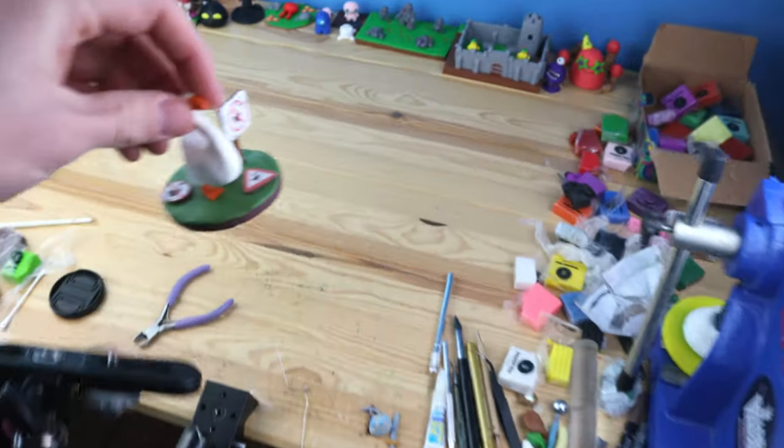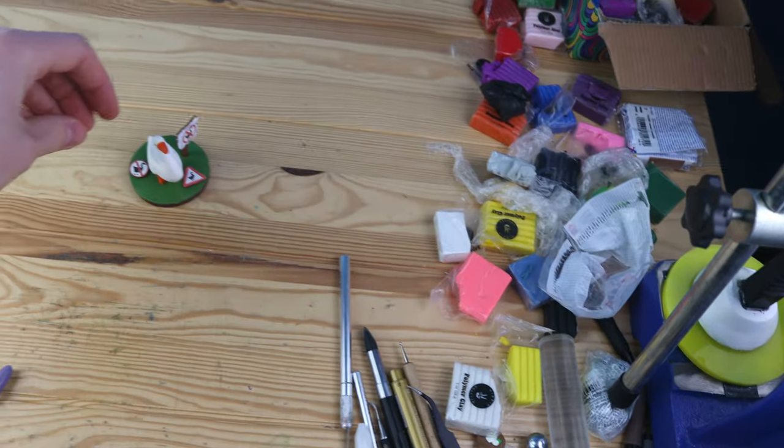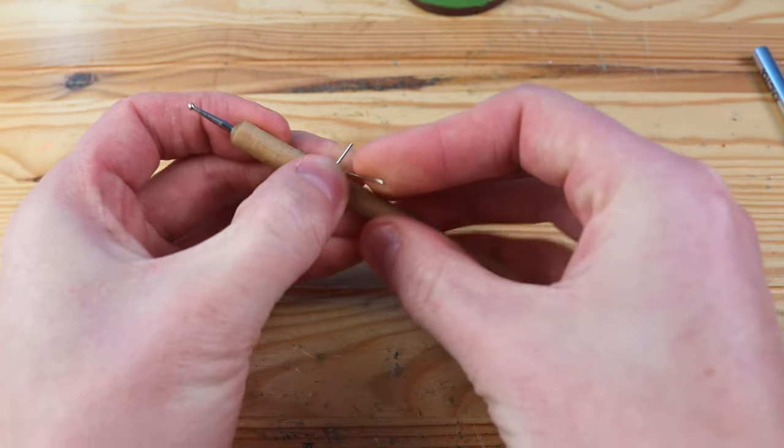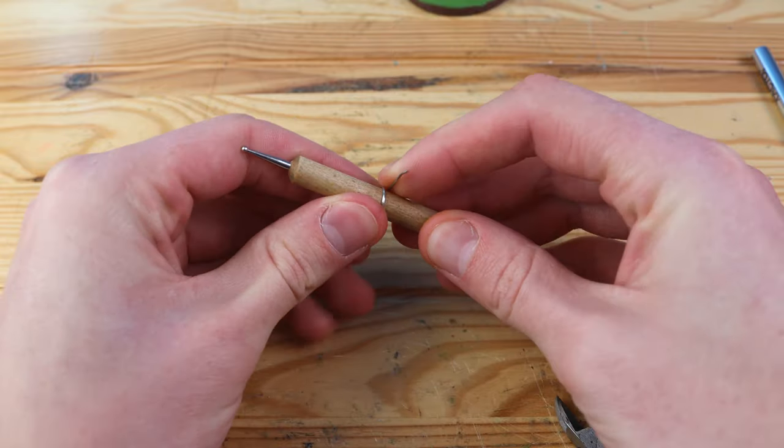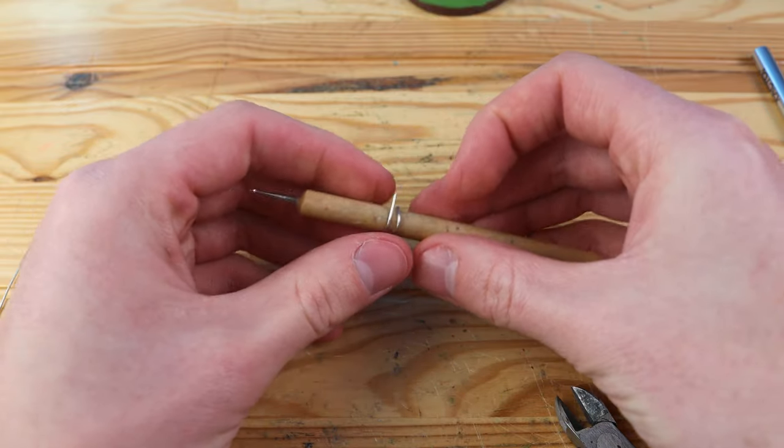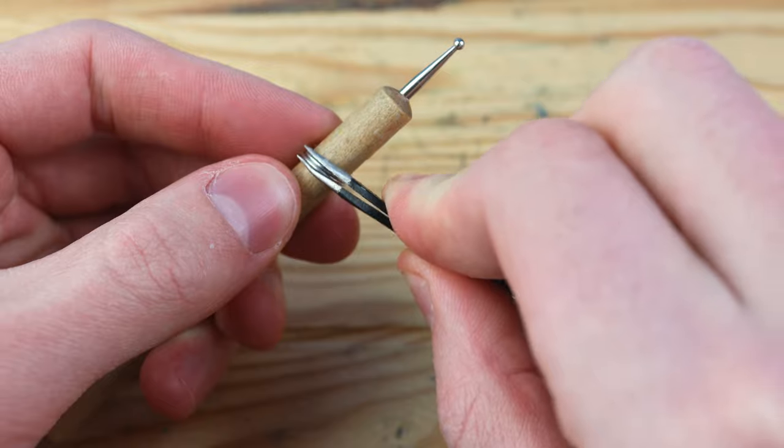At first I wasn't sure what to add to this figure, but you pick up a lot of things in the game, so I decided on creating a keyring. I'm wrapping the wire around this tool to get a nice rounded shape that looks just like a real keyring.